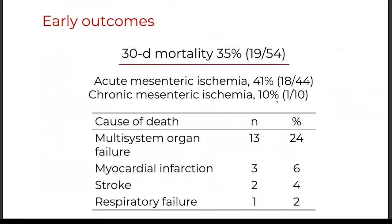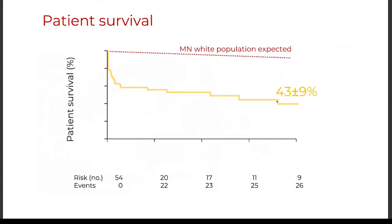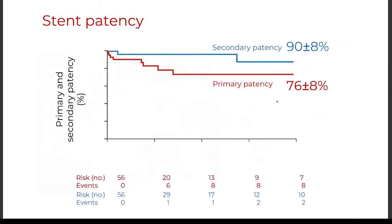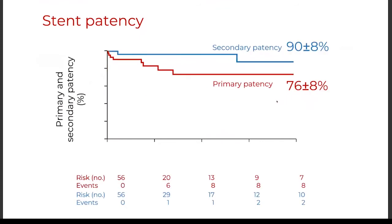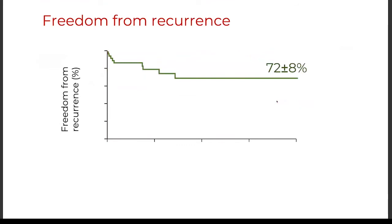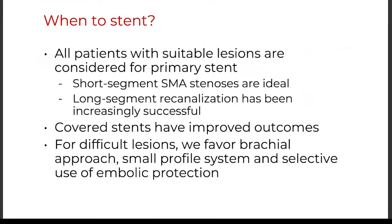Mortality on the ROMS paper was quite high, illustrating that many of these patients unfortunately present late. Patient survival is much less than expected for the population, mostly due to early mortality. Patency is similar to what we get for chronic mesenteric ischemia, and freedom from recurrence was 72%.